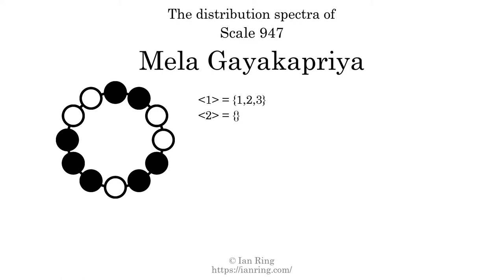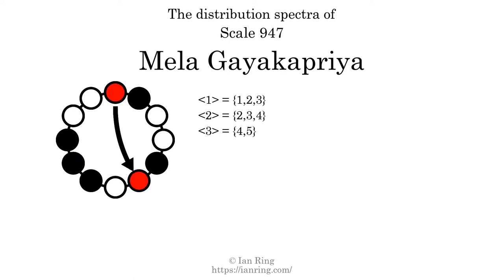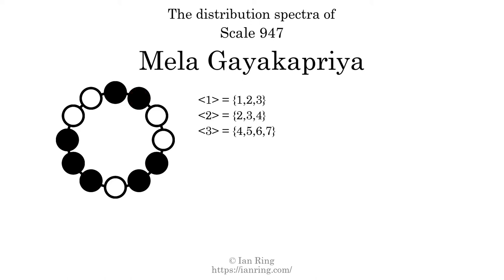The generic interval of two scale steps comes in three different specific interval sizes: two semitones, three semitones, and four semitones. The spectrum width of this generic interval is two. The generic interval of three scale steps comes in four different specific interval sizes: four semitones, five semitones, six semitones, and seven semitones. The spectrum width of this generic interval is three.